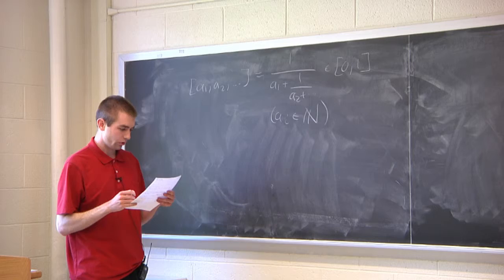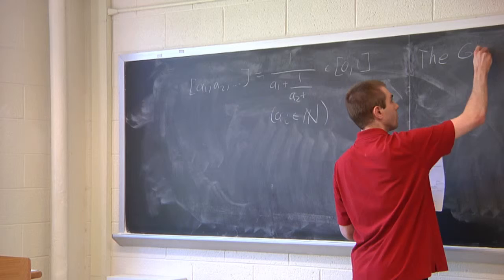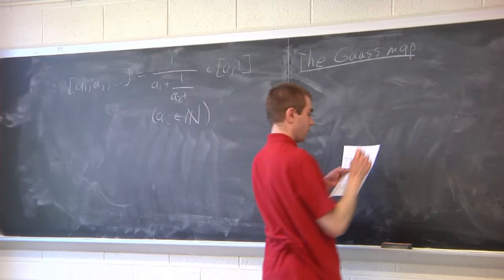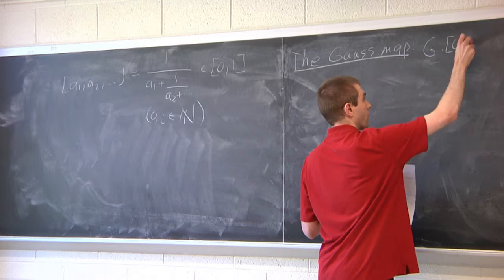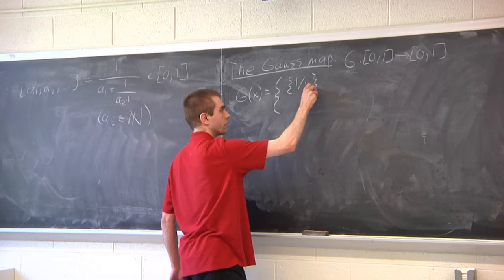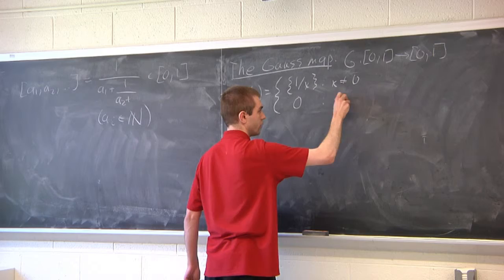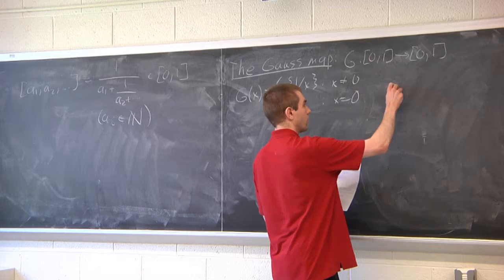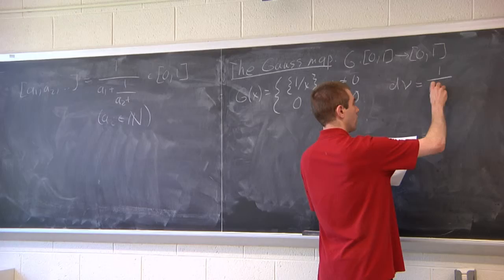The first transformation I want to talk about is the Gauss map, which has a lot of connections to continued fractions. It is a map from the interval (0, 1) to itself, defined by G(x) equal to the fractional part of 1/x for nonzero x, and we send 0 to 0. This map is measure-preserving with respect to the measure dν = (1/log 2) · dx/(1+x).